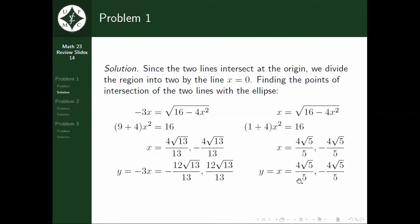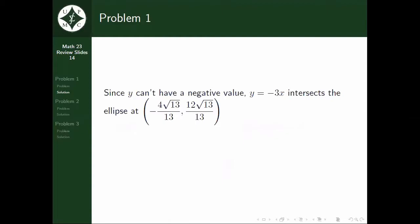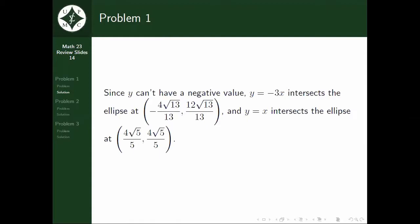When y is equal to x, we get the ordered pairs (4√5/5, 4√5/5) and (−4√5/5, −4√5/5). Looking at our graph, we can have a negative value for y. So when y = −3x intersects the ellipse, it intersects at the point (−4√13/13, 12√13/13). And when y = x intersects the ellipse, it intersects at (4√5/5, 4√5/5).